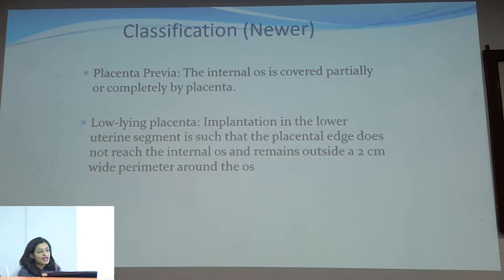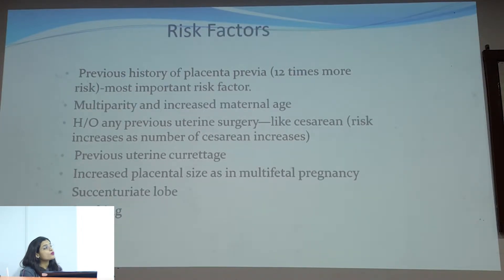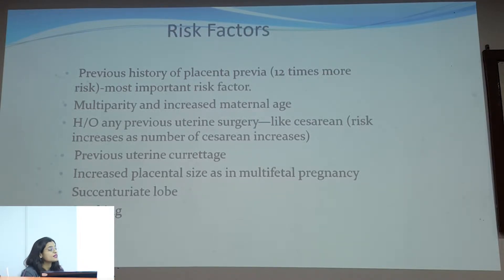In placenta previa, the internal os is covered partially or completely by the placenta, whereas in low-lying placenta, the placenta is within 2 cm around the internal os. The risk factors of placenta previa include previous history of placenta previa, multiparity, increased maternal age, history of uterine surgeries, previous uterine curettage, increased placental size, and smoking.